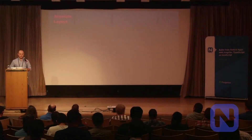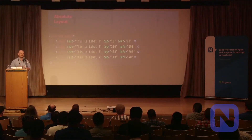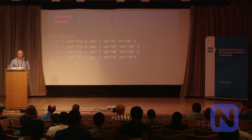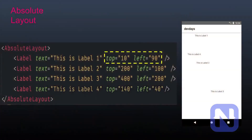The absolute layout is perfect if you need to position something within the coordinate system on the screen by top and left positions. Here we have a first label at top 10 and left 90, and in the screenshot you can see those four labels and their different positions.